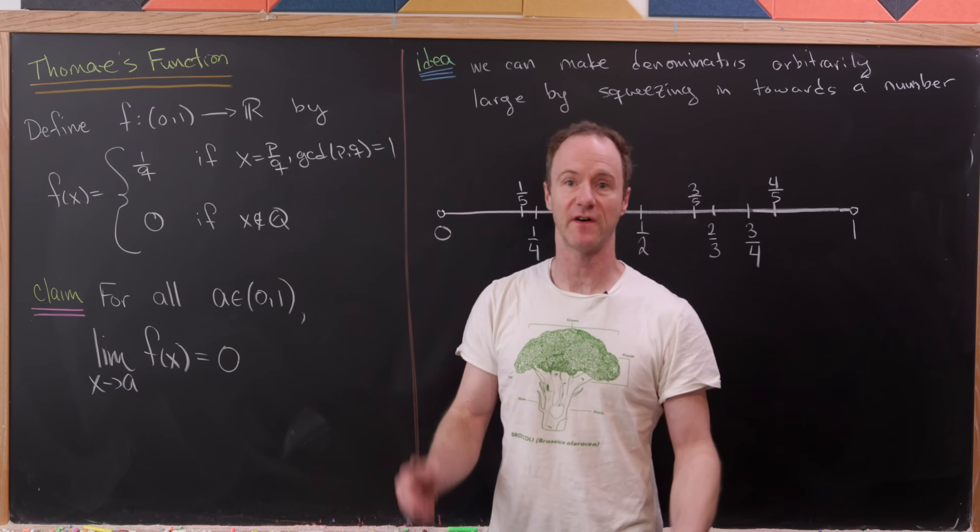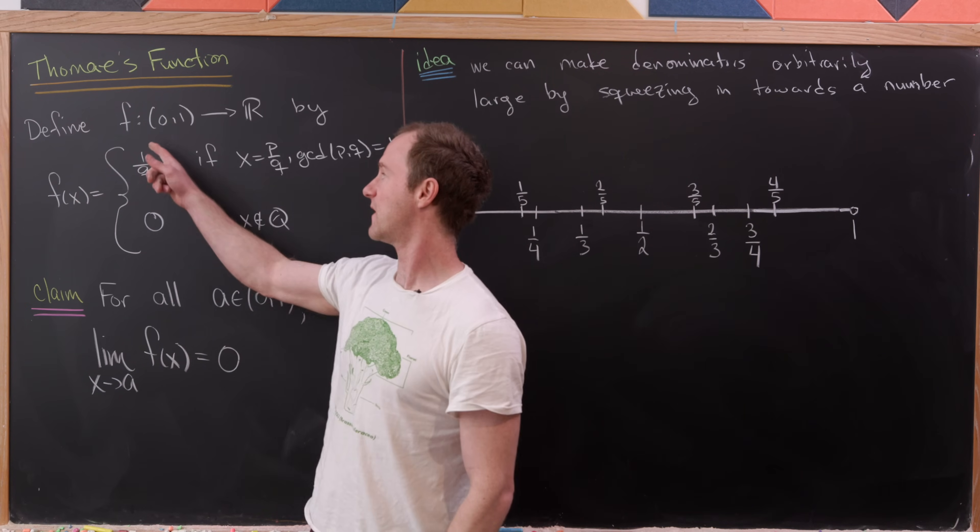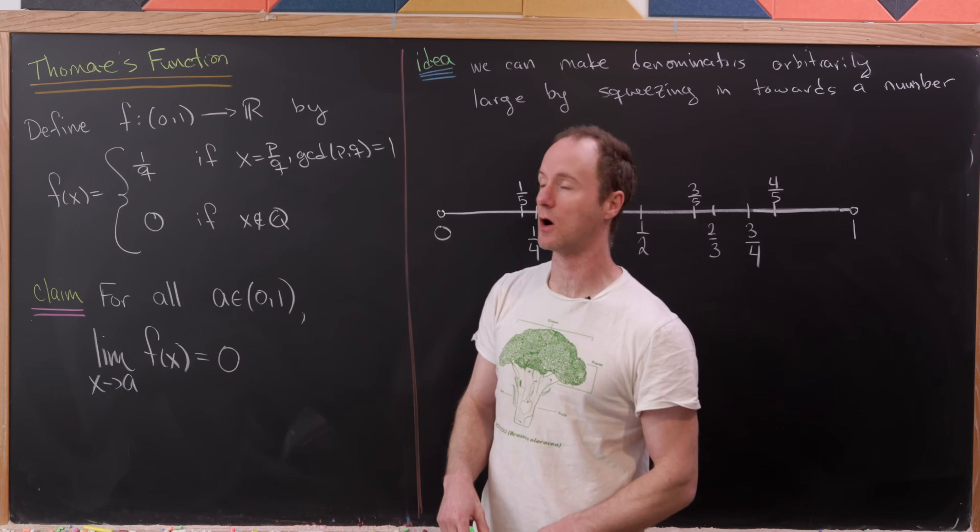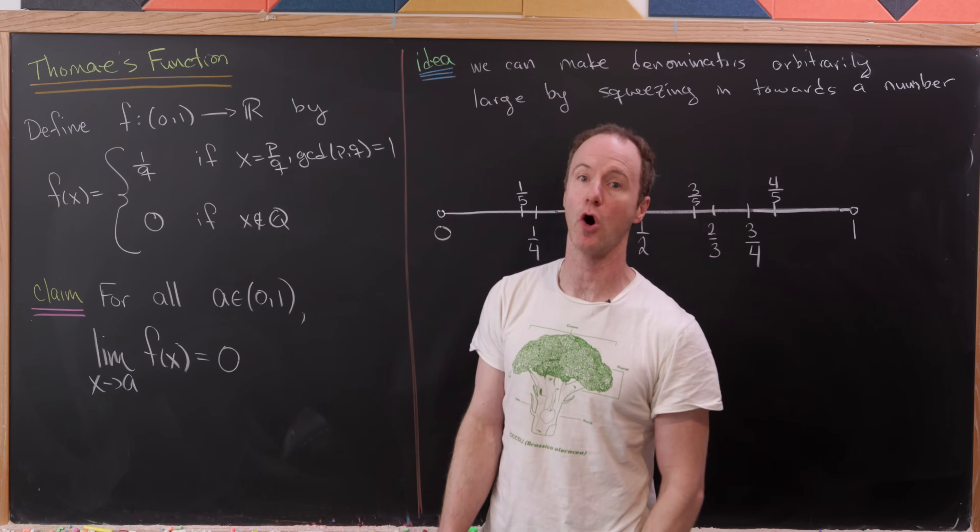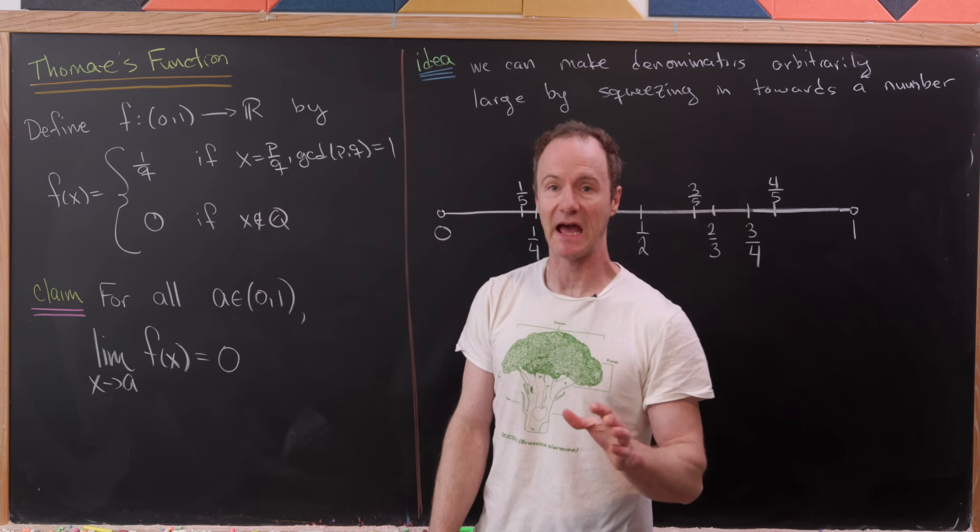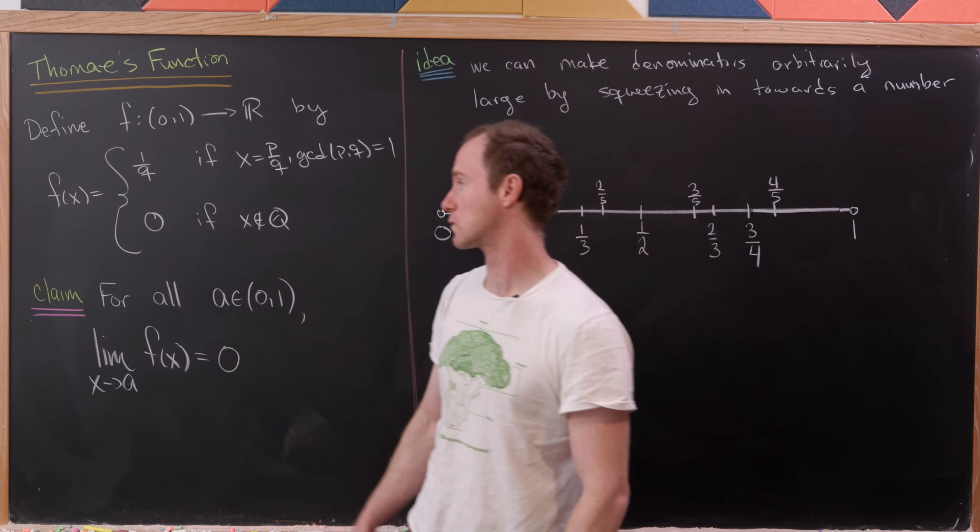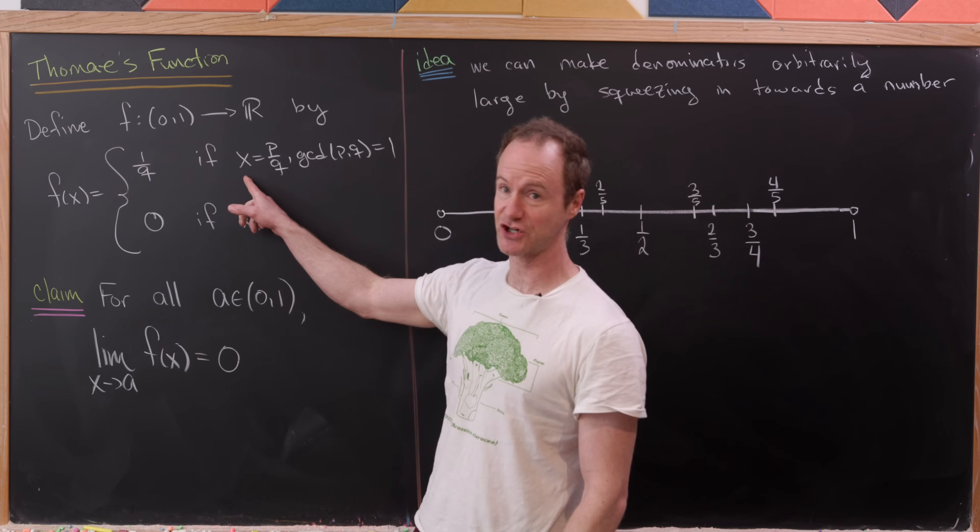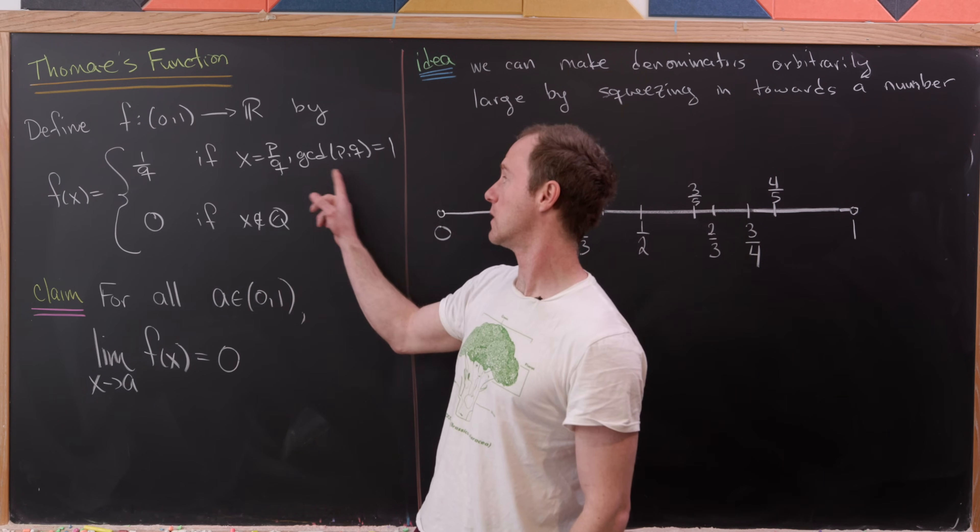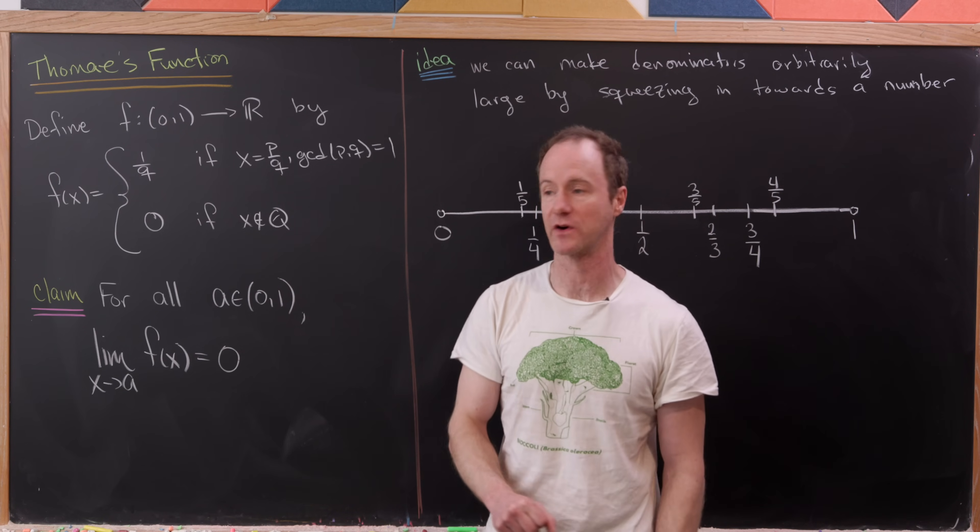So how do we define this function? We'll define the function from the open interval (0, 1) to R, although we could extend this to all real numbers, but we're going to stick with the open interval (0, 1). And it's going to be defined by the following rule: f(x) is equal to 1/q if x is rational and is written in lowest terms as p/q.